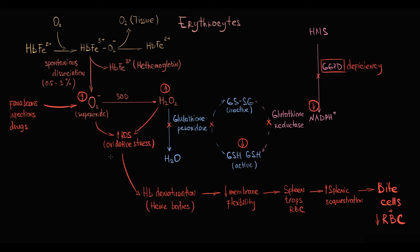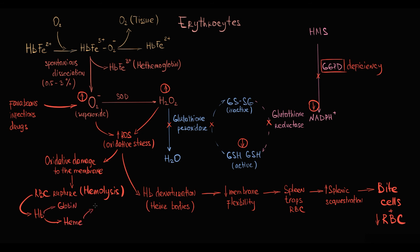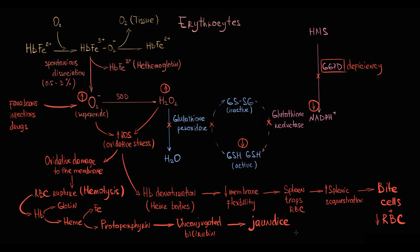Substantial oxidative stress inside the erythrocyte also causes direct damage to the erythrocyte membrane, and at some point damage to the membrane results in intravascular rupture of the erythrocyte — a condition known as hemolytic anemia. With disruption of the membrane, hemoglobin is released into the circulation. Hemoglobin is made of heme and globin; heme is iron in complex with protoporphyrin, and the breakdown of protoporphyrin results in formation of unconjugated bilirubin, and increasing amounts of bilirubin cause jaundice. So glucose-6-phosphate dehydrogenase deficiency results in increasing splenic sequestration and hemolysis of red blood cells, causing anemia and jaundice.